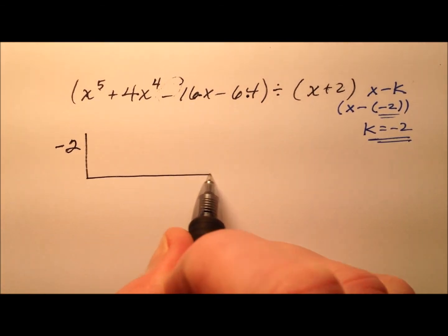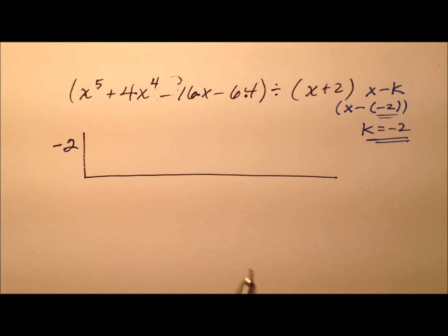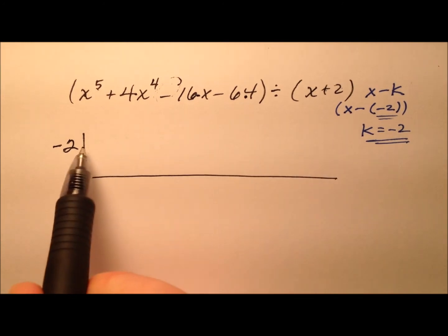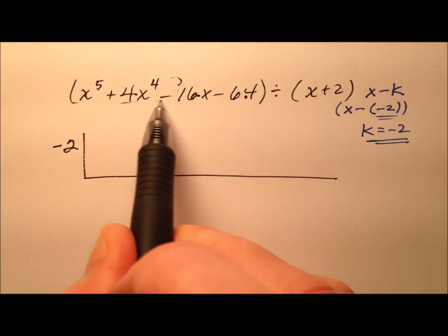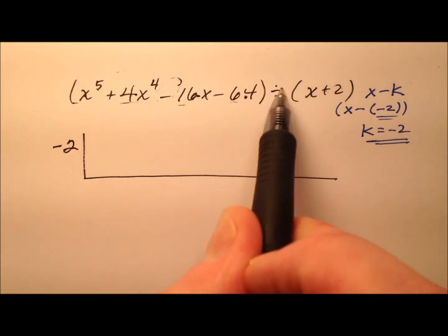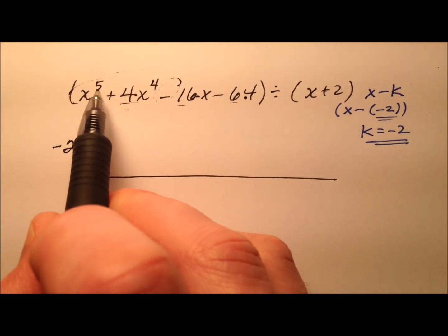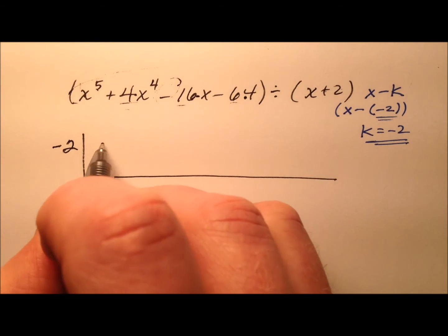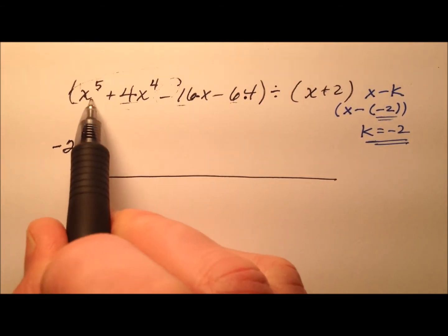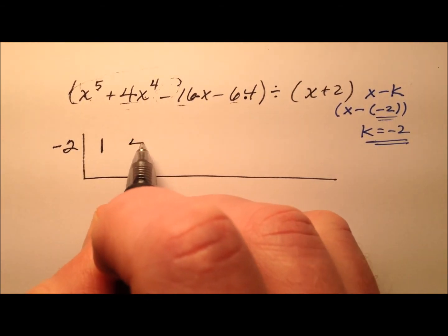I will do my little bar. Now, I'm going to fill this top row with the coefficients and the constant from this polynomial. It looks like degree five is the highest, and its leading coefficient is one. Degree four is next, and that coefficient is four.